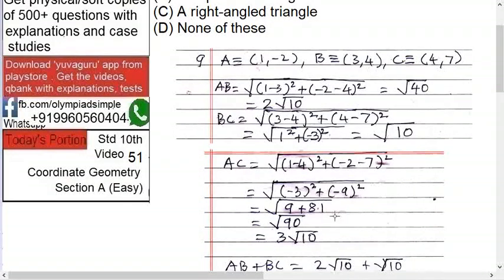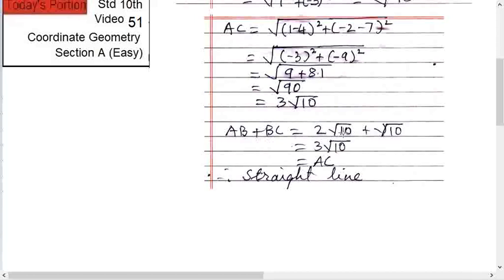Now you see, what is the link between these two? Root 10, root 10, and 3 root 10. If you add these two, AB plus BC, you get 2 root 10 plus root 10, which is 3 root 10. But that is AC, right? That's why these three points are collinear.